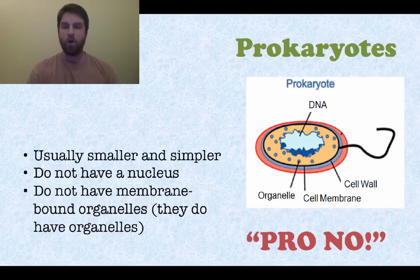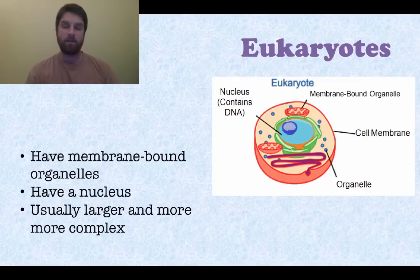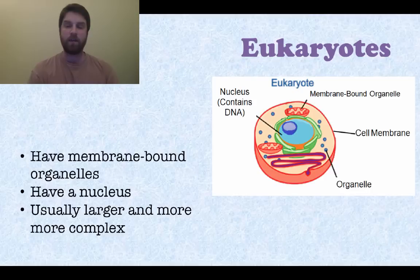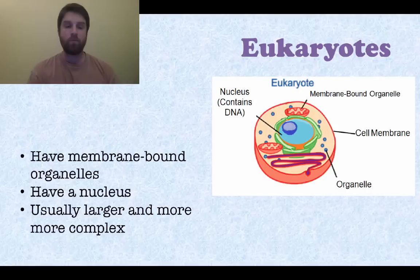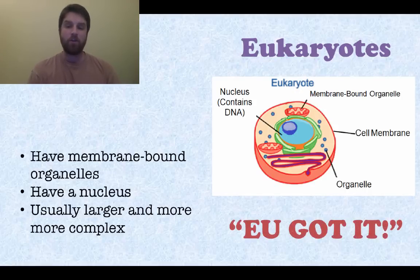So do prokaryotes have a nucleus? 'Pro, no' — that's how we remember that. Next are eukaryotes. Look at this — it's a much more complicated-looking cell. They have membrane-bound organelles, things like mitochondria and other things that we'll get into later. All of their organelles inside have membranes around them. They have a nucleus, which also has a membrane around it, and they are much, much more complex than prokaryotes.